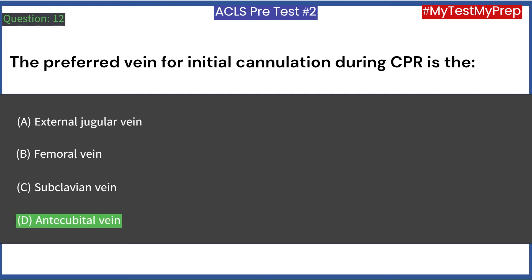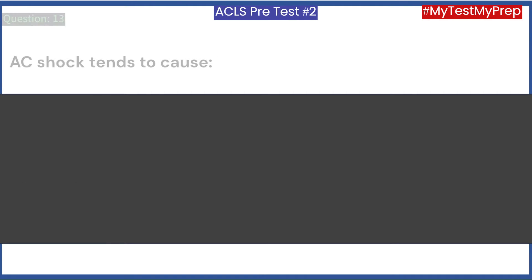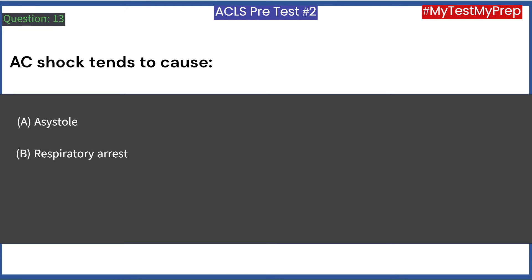AC shock tends to cause: A. Asystole. B. Respiratory arrest. C. Bradycardia. D. Ventricular fibrillation. Answer: D. Ventricular fibrillation.